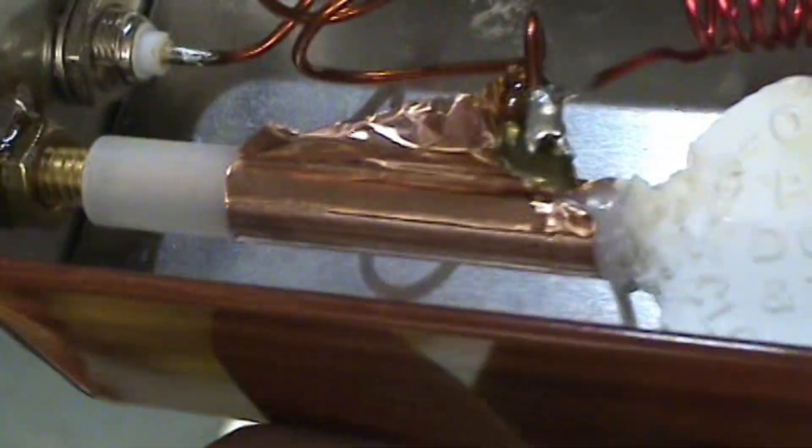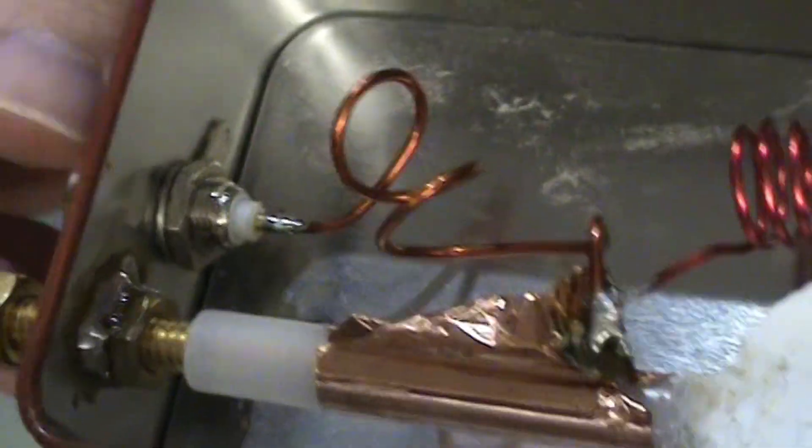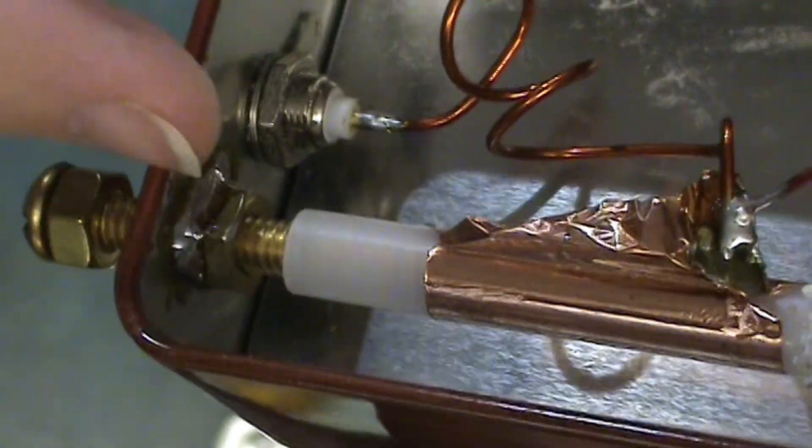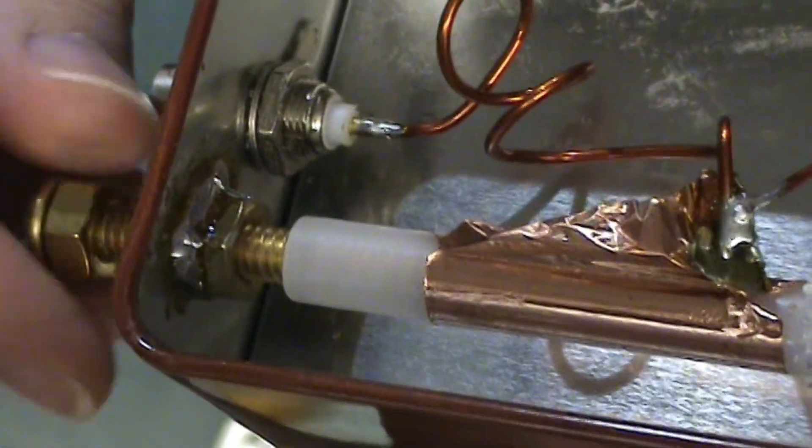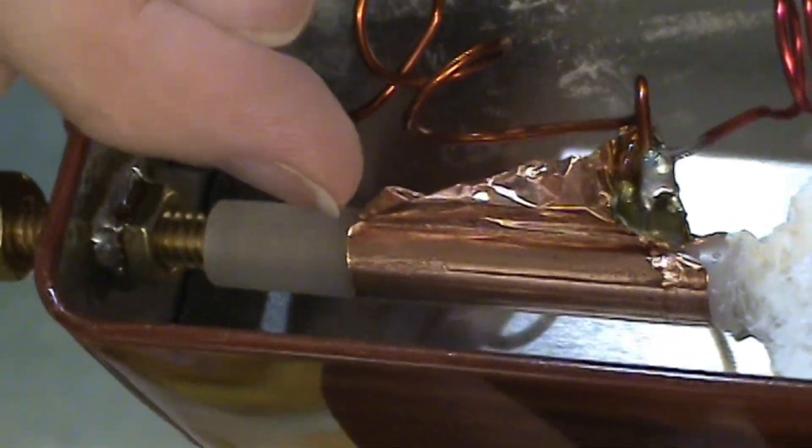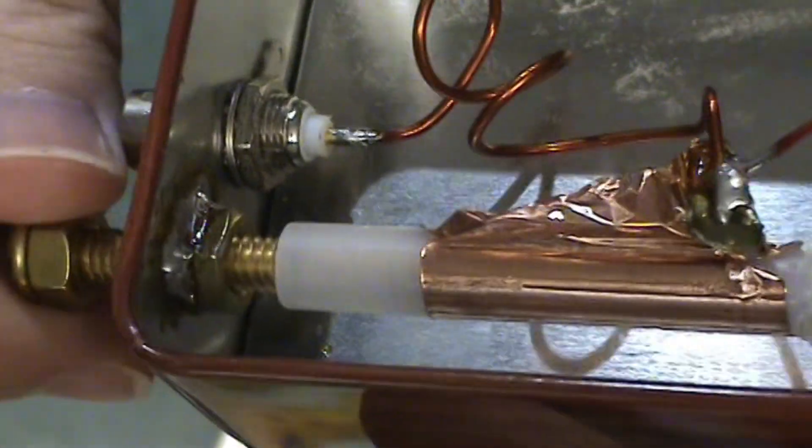So as you turn the screw, the screw goes further and further into the tubing until it comes into line with the foil tape on the outside. And then the two form a capacitor with the polyethylene tubing as the dielectric. Now I forget what, I haven't used this in a while so I forget what exactly the capacitance was of this.